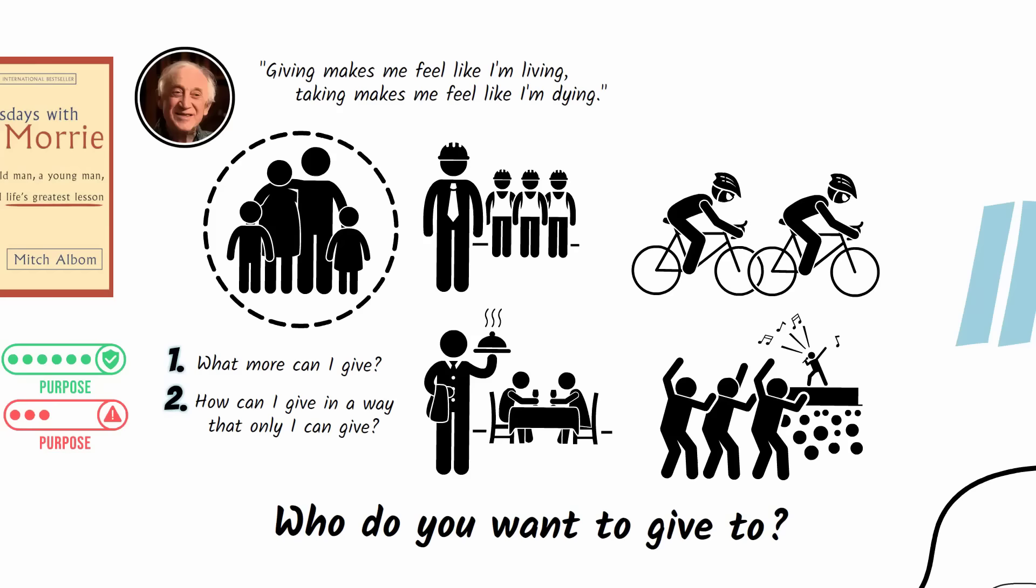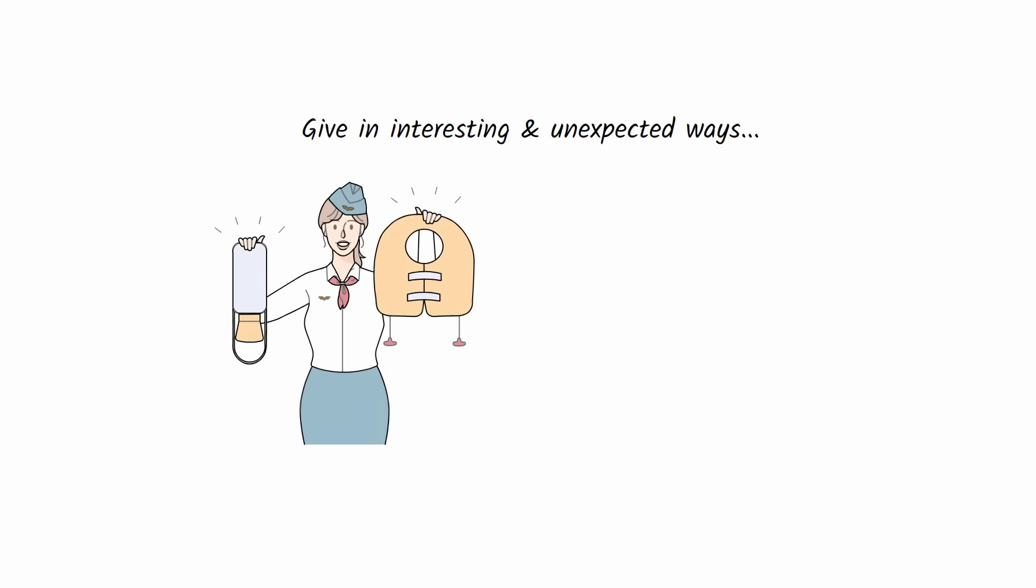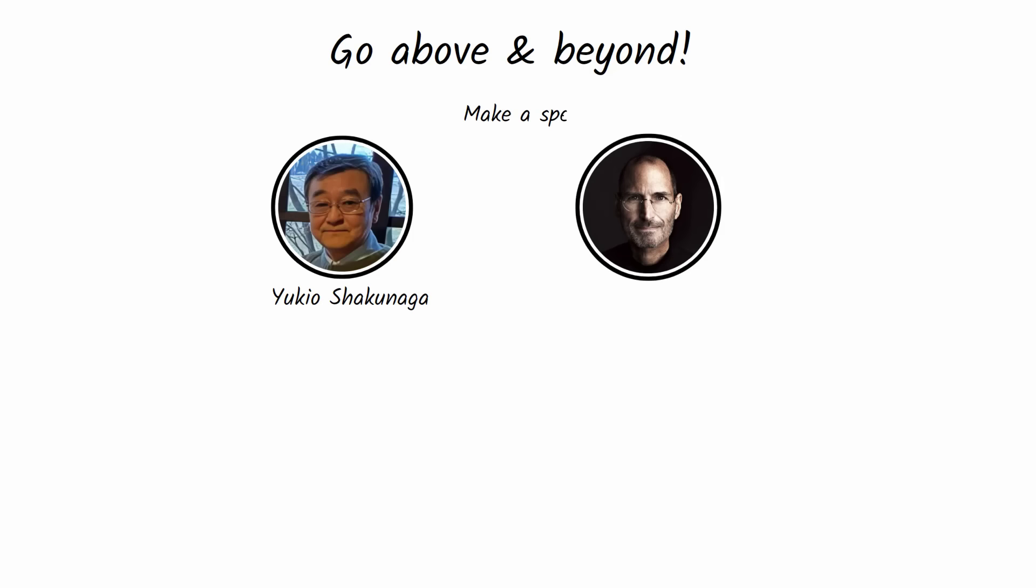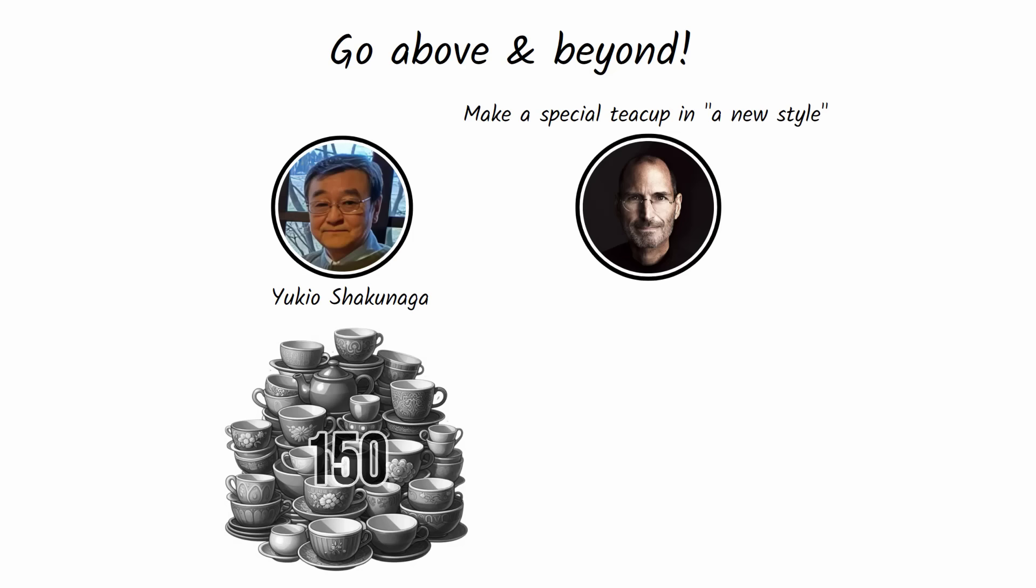When you give to people you care about, give in interesting and unexpected ways. Be like a flight attendant who adds something extra to make a safety speech funny. Or a salesperson who deviates from the script to create a human connection. Or an artist who goes above and beyond to make something special, like Japanese potter Yukio Shakunaga. Just before he passed, Steve Jobs asked Shakunaga to make him a special teacup in a new style. To satisfy his request, Shakunaga made 150 teacups to test new ideas, and then chose the best 12 and sent them to Jobs.